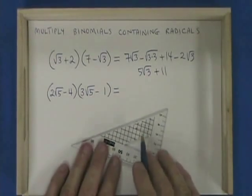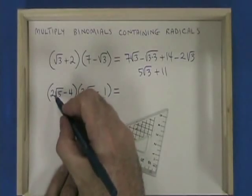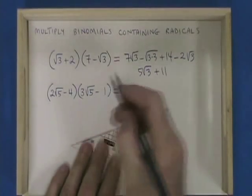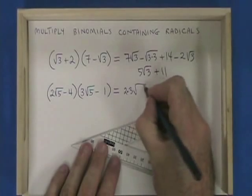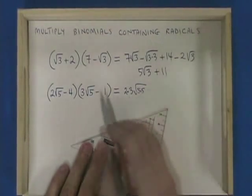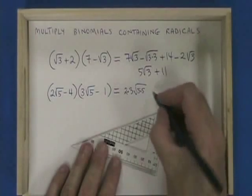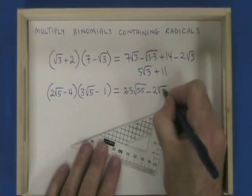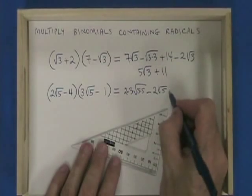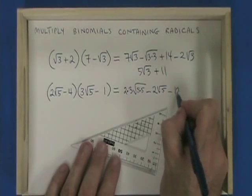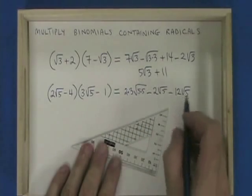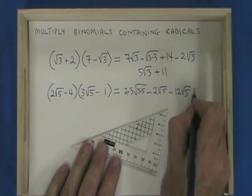In the second example, I have 2 times 3. And root 5 times root 5, which gives me root of 5 times 5. I have minus 1 times 2 root 5, which is minus 2 root 5. I have minus 4 times 3 root 5, which is minus 12 root 5. And I have minus 4 times minus 1, which is plus 4.